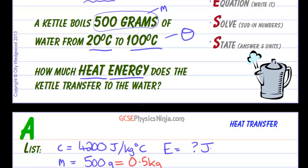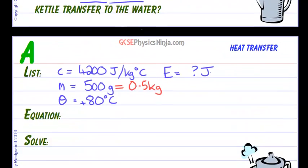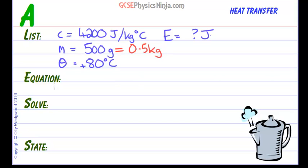We've done the hardest bit. All we need to do now is write down an equation which links all of these letters together. And from the last flashcard, you're now familiar that the specific heat capacity equation is energy equals M times C times theta.